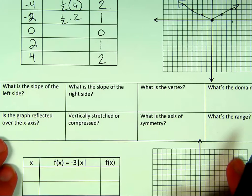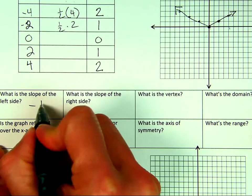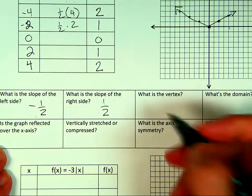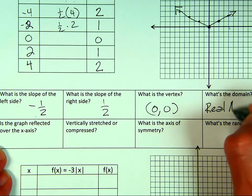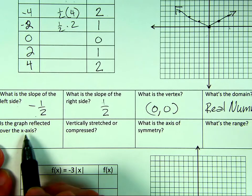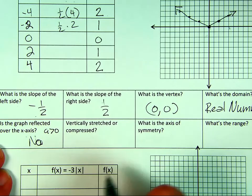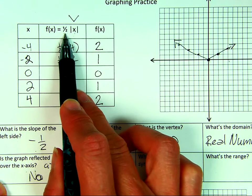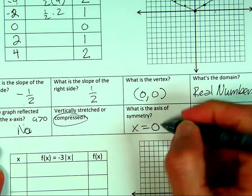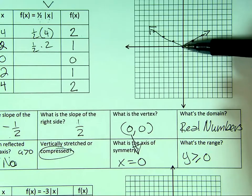Now let's answer questions about y = ½|x|. Slope of the left side: negative one half. Slope of the right side: positive one half — the opposite. Vertex: (0, 0). Domain: all real numbers. Is the graph reflected over the x-axis? No, because A was positive — greater than zero. Vertically stretched or compressed? Compressed, because A is between zero and one. Axis of symmetry: x equals zero. Range: y is greater than or equal to zero, since the vertex is the lowest point.